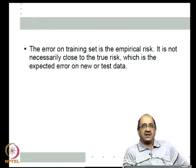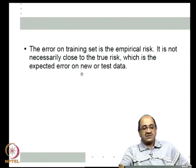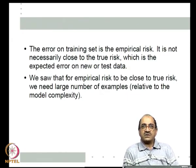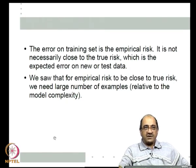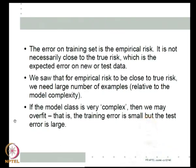From statistical learning theory, the error on the training set is the empirical risk and it is not necessarily close to the true risk - the expected error on test data. Empirical risk will be close to true risk only when you have a large number of examples, large relative to the model complexity (the VC dimension). If the model class is very complex, we will over-fit: low training error but large test error.